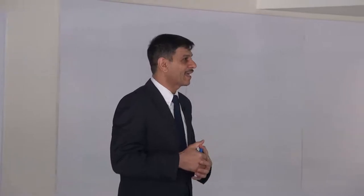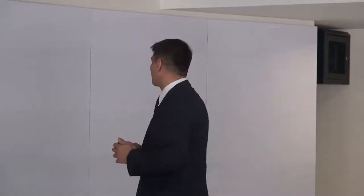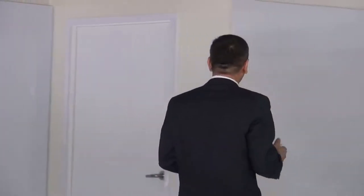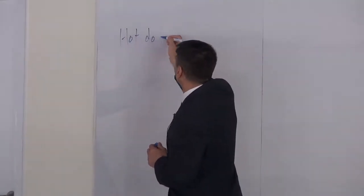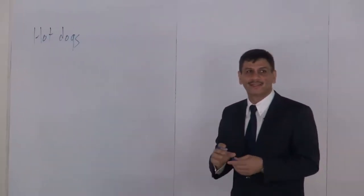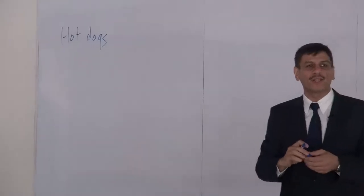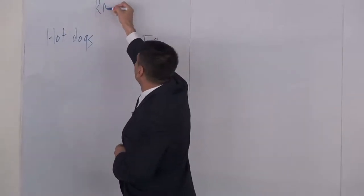Let's say you'd like to start a business selling hot dogs. What will you need to start — the basic things? You'll need hot dogs. How much would that cost for a day's operation? 50 ringgit. So 50 ringgit. What else do you need? A grill. How much will that cost? 200 ringgit. So 50 plus 200.